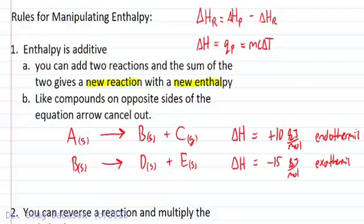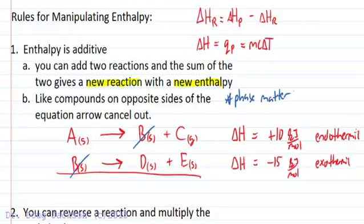Hess's law says that if enthalpy is additive, then we can add these two equations together and cancel out things that are on opposite sides. We see that B as a solid appears on both sides, so we really need to note that phase matters for enthalpy. Gases will tend to have more enthalpy than solids. Phase matters.